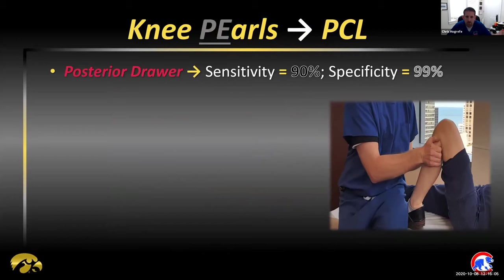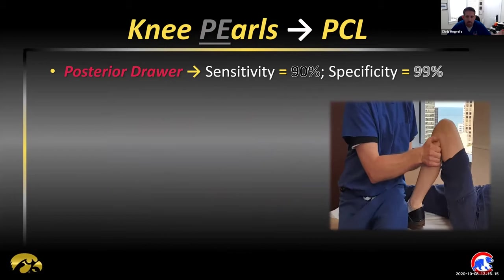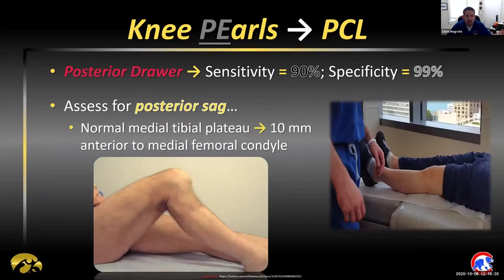As for the PCL, the posterior drawer is a great test. Sensitivity and specificity are very high across numerous literature sources — it's really the same as the anterior drawer, just in the reverse direction: posterior translation of the leg, and look for sag or translation. You want to take a peek before you do the exam, because if the tibia is already sitting posteriorly — more than 10 millimeters in most cases — that's a pretty good indication that the PCL is insufficient.